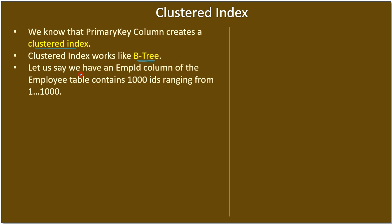Let's say we have an emp_id column in an employee table that contains a thousand IDs ranging from one to thousand. To explain the clustered index, we are taking this example: a table 'employee' which contains a column emp_id with around 900 to 1000 records, where some 10 IDs are missing and the IDs range from one to thousand.